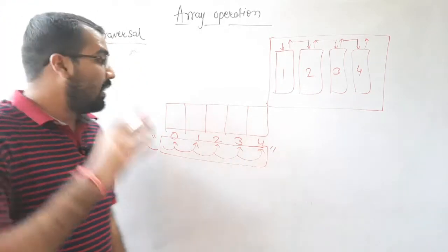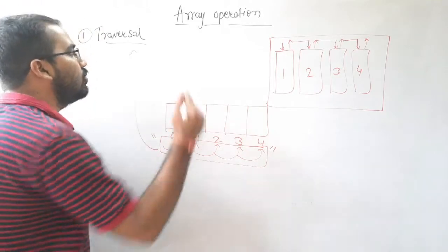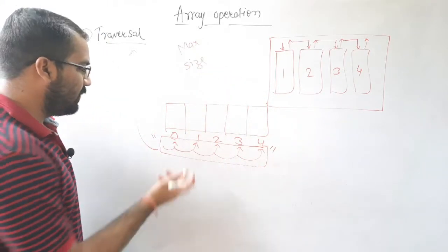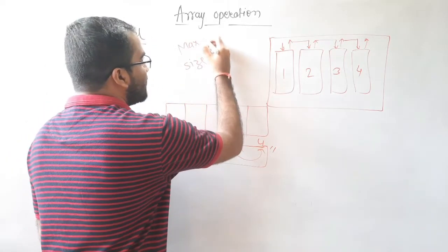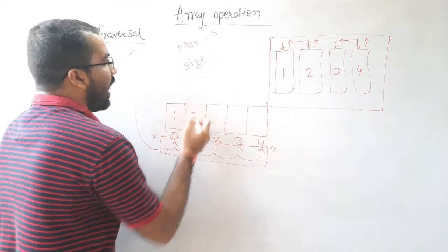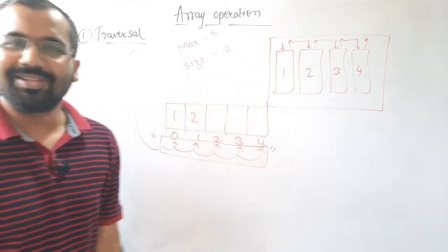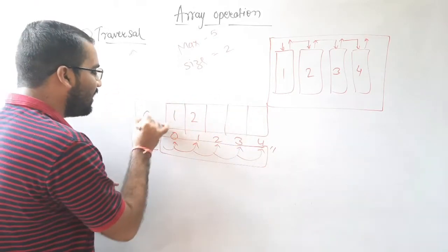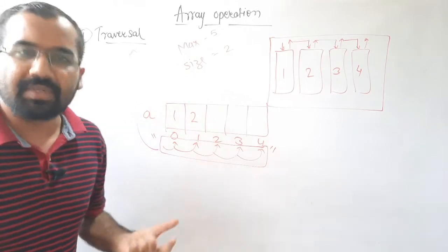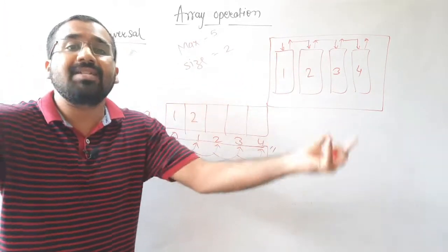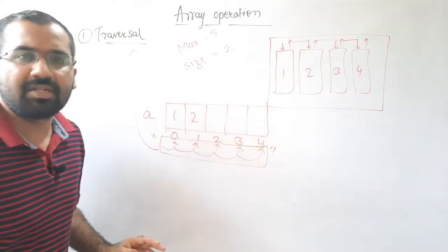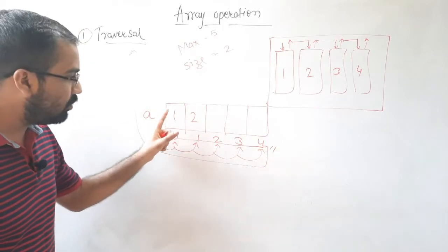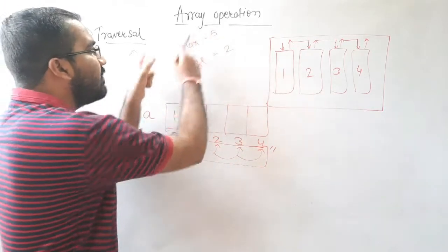One more thing regarding arrays — there are two terms: max and size. If you see here, there are five slots, so max equals five. Max means the maximum capacity of the array to accommodate elements — what is the maximum number of elements that can sit in your array. In this case, it is five.